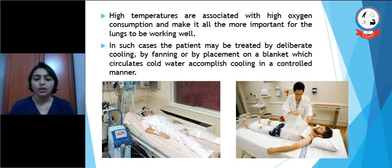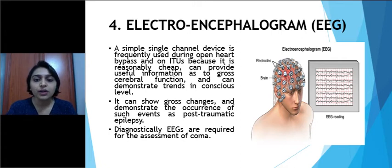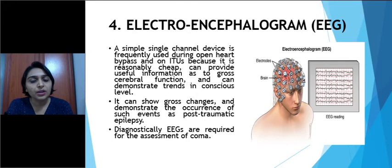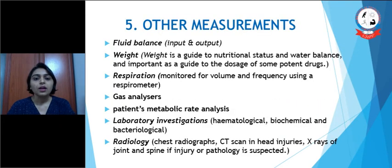Next is electroencephalogram, that is EEG. Just like ECG monitoring, it gives an idea about the brain. A simple single-channel device is frequently used during open heart bypass and in ICUs because it is reasonably cheap, can provide useful information about gross cerebral function, and can demonstrate trends in conscious level. It is usually used in ICU patients who have post-traumatic epilepsy, who have undergone brain surgery, or patients who are already in a coma.